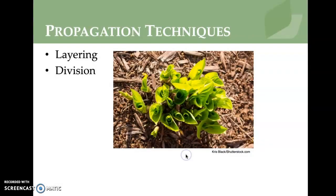Layering and division are shown here with a picture of hostas, which are really popular perennial plants that come up every year. Layering is a vegetative or asexual propagation technique that allows stems still attached to the parent plant to form roots. Division is when one plant is divided to create multiple plants — that's the difference between those two.